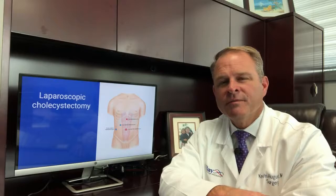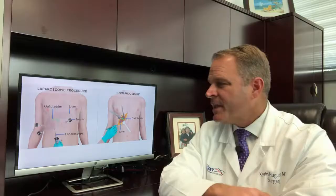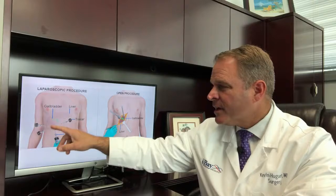Gallbladder surgery is typically done through little incisions, known as laparoscopic surgery. Laparoscopic removal of the gallbladder is called a laparoscopic cholecystectomy. We typically go in through little incisions and inflate the abdomen with gas so that we can see. We then place what are called trocars into the incisions to perform the work we need to do to remove the gallbladder.